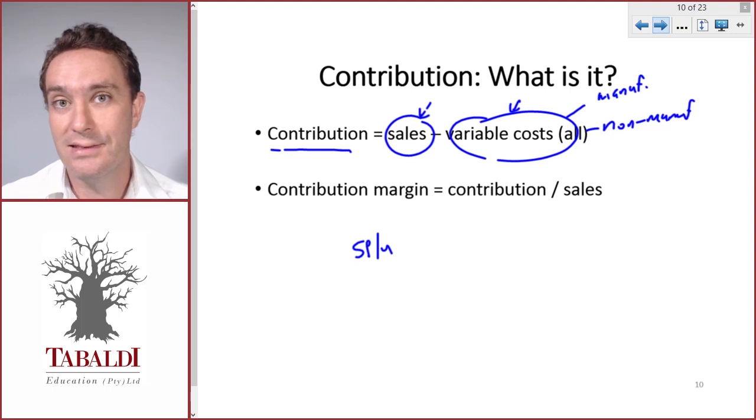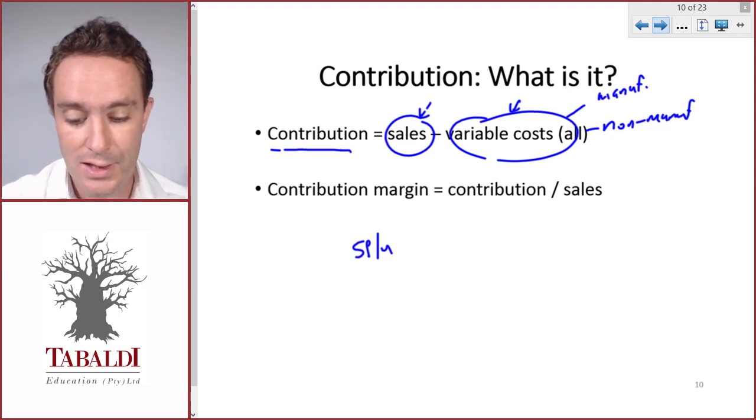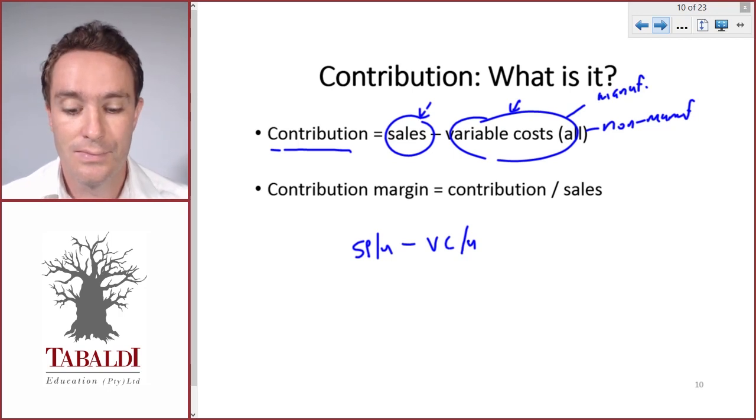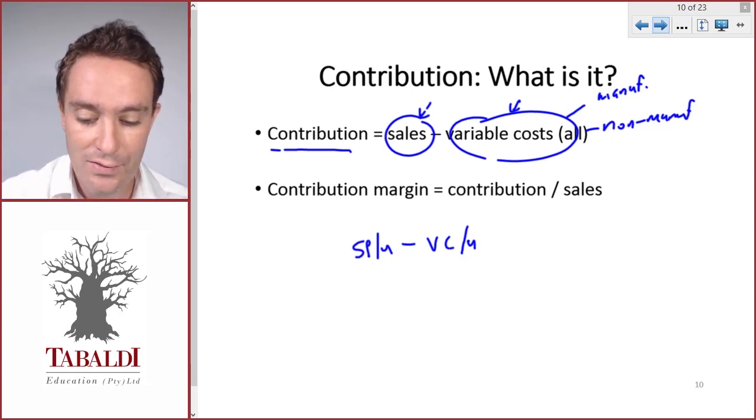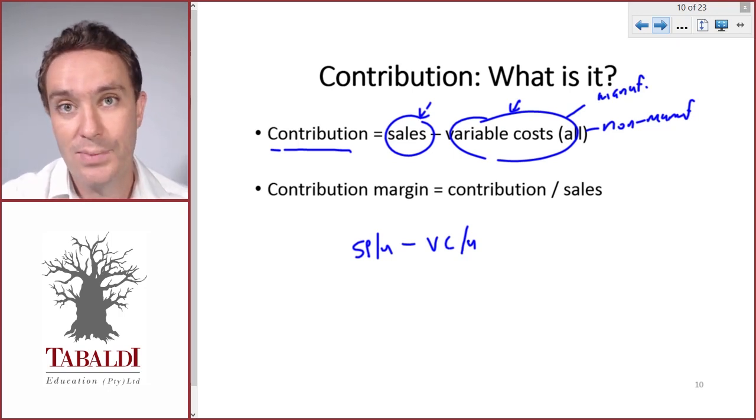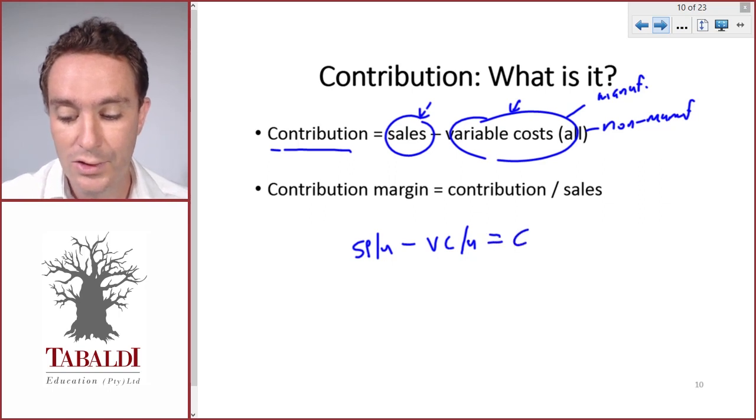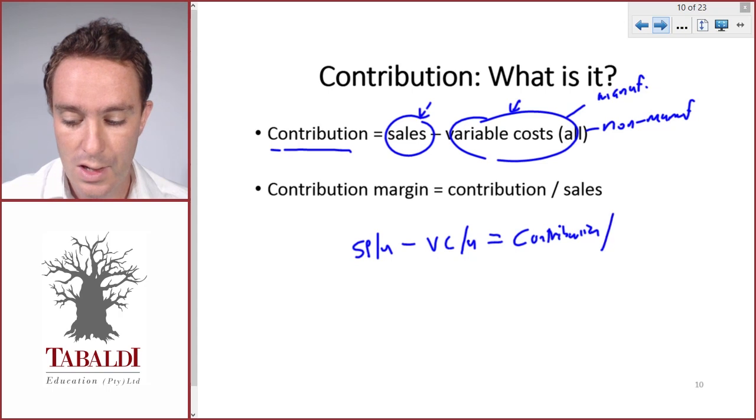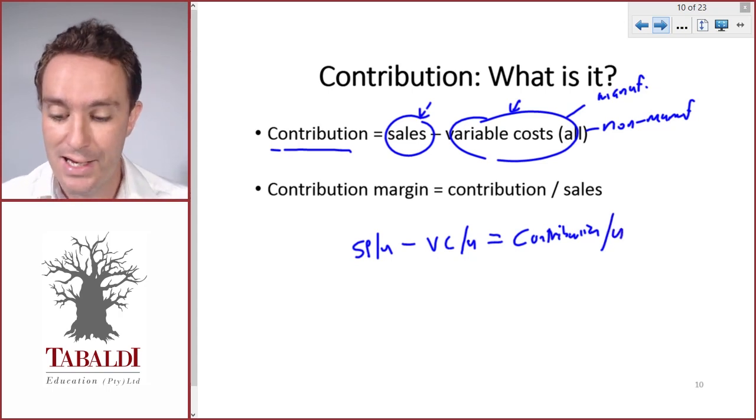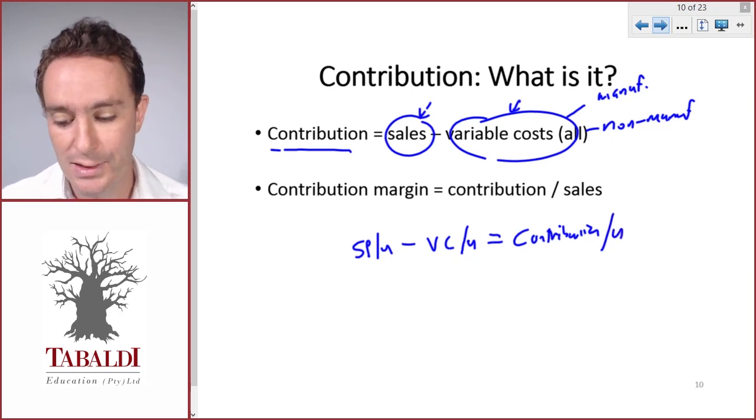Since variable costs also increase in direct proportion to the number of units, variable cost per unit stays constant. If we deduct variable cost per unit from sales price per unit, we get contribution per unit, which stays fixed on a per unit basis and increases in direct proportion to the number of units.